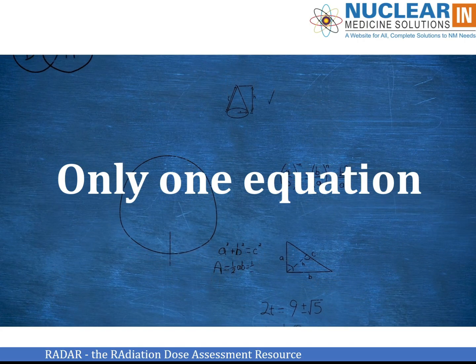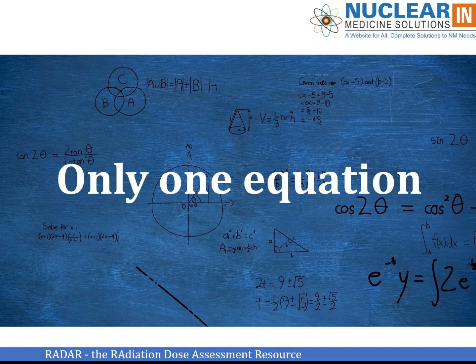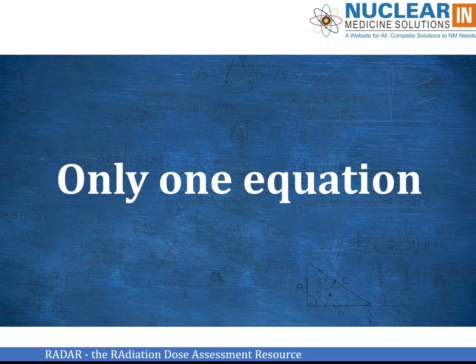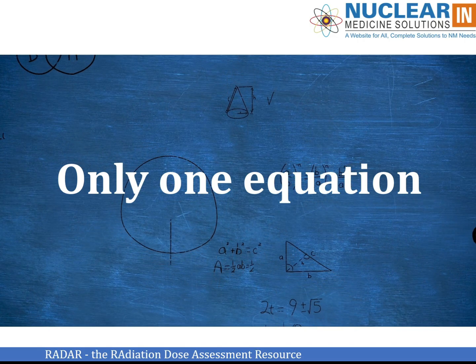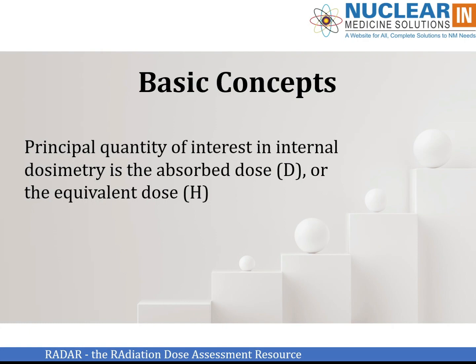Just learn this one equation, and you'll understand internal dosimetry. Its application, of course, depends on knowing where to find all of the inputs to the various terms. The principal quantity of interest is absorbed dose — energy per unit mass — and the equivalent dose, which is energy per unit mass modified by certain radiation weighting factors. Our ultimate goal in any internal dose assessment is the protection of people. These quantities, absorbed dose and equivalent dose, are well correlated with radiation effects, and we'll have an entire lecture about radiation biology.